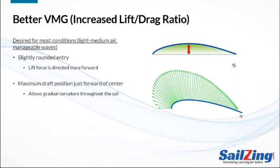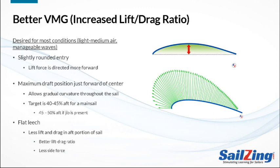Second, you want the maximum draft just forward of center. This puts gradual curvature throughout the sail, which is more efficient than concentrating the curvature in one place. Most sailmakers design their sails so the draft is 40 to 45 percent aft. If the boat has a jib, the draft is placed further aft to keep the slot open. Finally, you want a flat leech, which reduces lift in the aft portion of the sail and greatly reduces drag and side force.